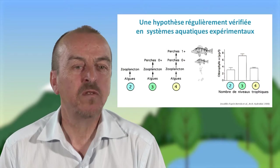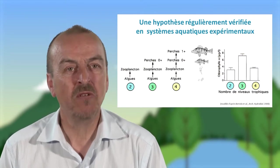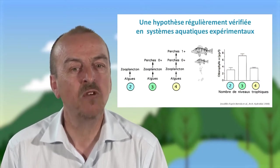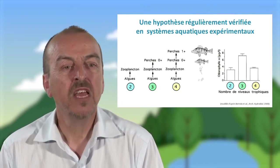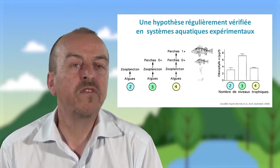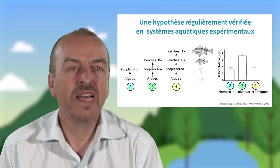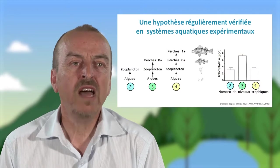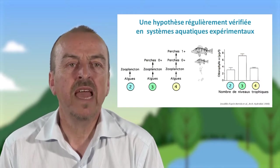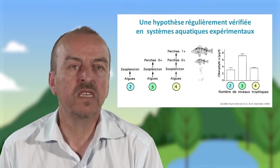Et enfin, des systèmes à quatre niveaux trophiques : des algues, du zooplankton, des perches zéro plus, et des perches un plus — donc des perches qui ont plus de un an — qui sont passées à un régime piscivore, et dans le cas de cette expérience, à un régime cannibale : elles consommaient les juvéniles de perches. Vous pouvez voir sur la partie droite que la biomasse de phytoplankton, ici représentée par une teneur en chlorophylle dans l'eau — la chlorophylle est le pigment contenu dans les algues qui permet d'exprimer la quantité de biomasse d'algues —, est plus forte dans les systèmes avec des poissons planctivores en sommet de chaîne, et moins forte dans des systèmes avec deux niveaux trophiques ou dans des systèmes à quatre niveaux trophiques avec des poissons piscivores en sommet de chaîne.